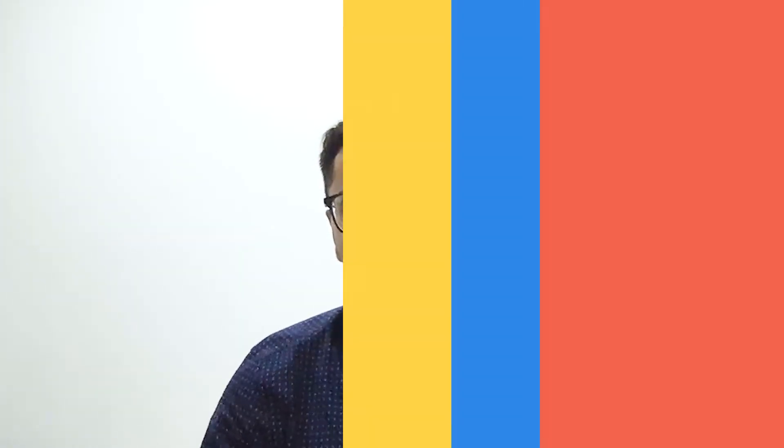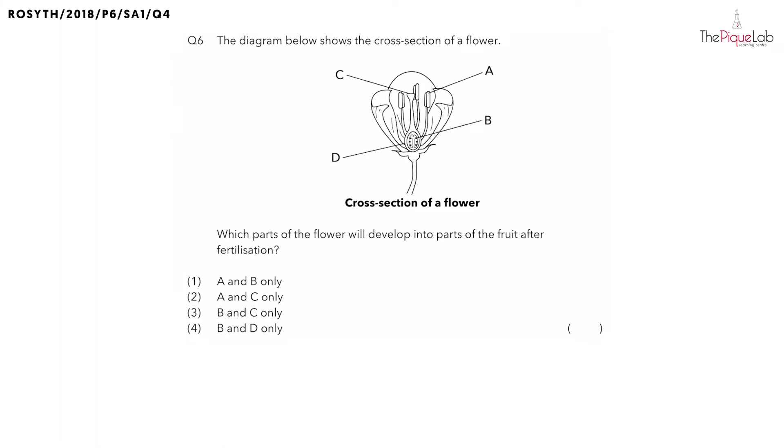So, let's begin. Question 6. The diagram below shows the cross-section of a flower and we are supposed to identify which parts of the flower will develop into parts of the fruit after fertilization.